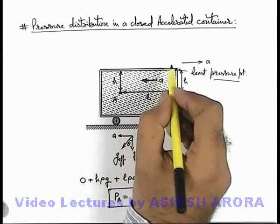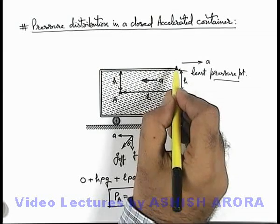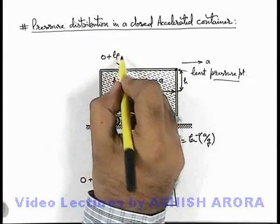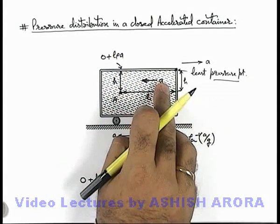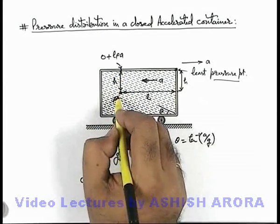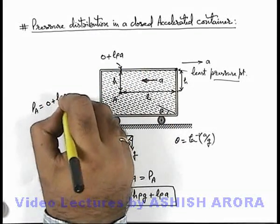Same equation can be written by moving along this path. First say if here we consider pressure to be zero, pressure at this point can be written as zero plus l rho ay, as along the length of l pressure is only varying due to ay.